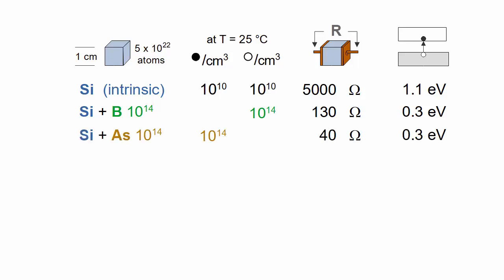Silicon doped with arsenic to 10 to the 14 atoms results in 10 to the 14 mobile electrons. The resistance is somewhat lower than the boron doped example, even though the number of charge carriers is the same, because electrons move more easily through silicon than holes.